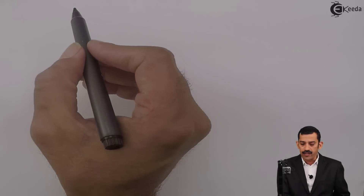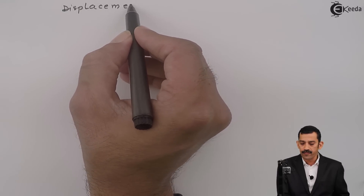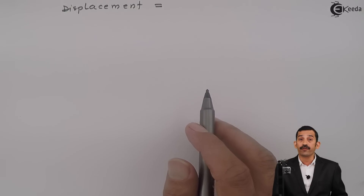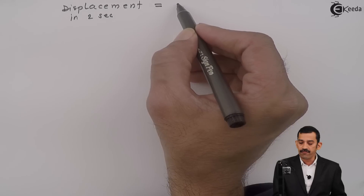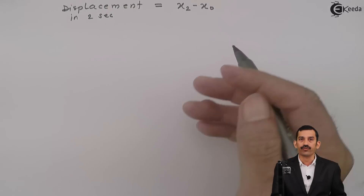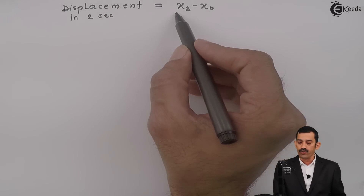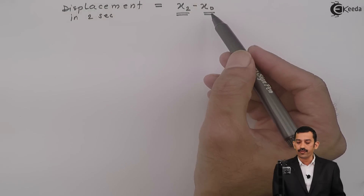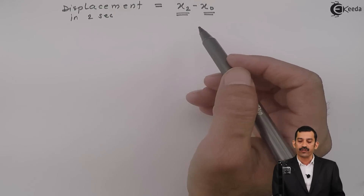Now we find the displacement at 2 seconds. Displacement at any time instant is always final position minus initial position. At t = 2 seconds, the displacement over these 2 seconds is x₂ minus x₀, where motion always starts at 0 seconds. To find displacement in 2 seconds, we need two values: x₂ and x₀. Substituting t = 2s gives x₂; substituting t = 0s gives x₀. Then x₂ - x₀ gives the displacement.